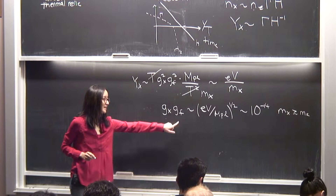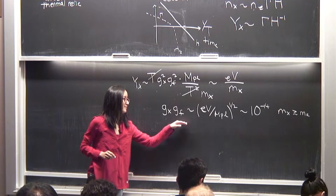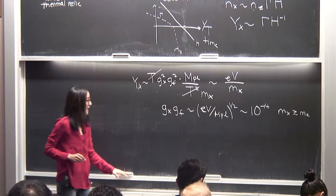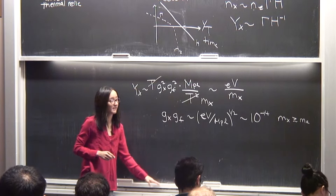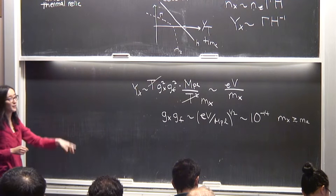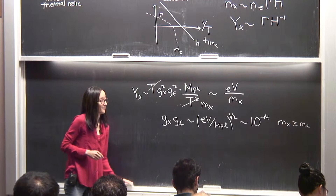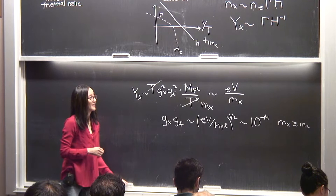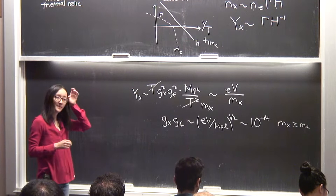Even though this coupling combination is very small — which might make you think it's much less detectable — by the end of today we'll show that the direct detection cross-sections turn out to be quite similar between case one and case three. So this is actually a potentially detectable benchmark. That wraps up the summary from last time.